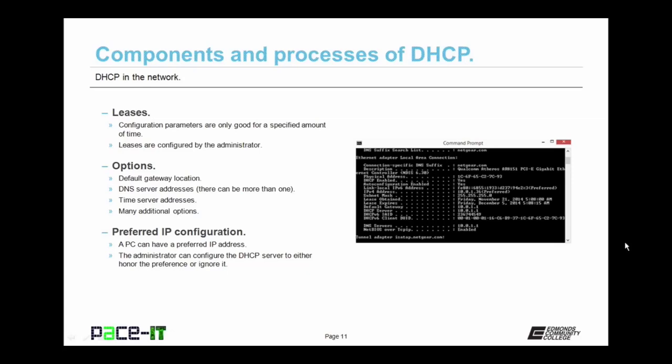There are also options that the administrator can configure. The first is the default gateway location. There's also the DNS server address, and the administrator can configure more than one DNS server location. An administrator can also configure an option for the PC to synchronize with a time server. There are many more additional options, but those are the big three to remember.